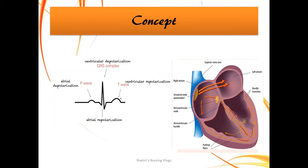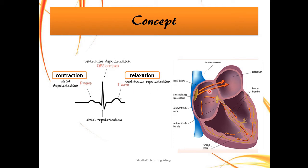I have already discussed the basics of ECG in the previous video, but there are certain points I'd like to emphasize. The P wave represents atrial depolarization or contraction. The QRS complex represents ventricular depolarization, which means ventricular contraction. The T wave represents ventricular repolarization, which means ventricular relaxation. So on an ECG strip, if you see any problem with the P wave, think of the atria. If the QRS complex is wider or narrower than normal, think of the ventricles.